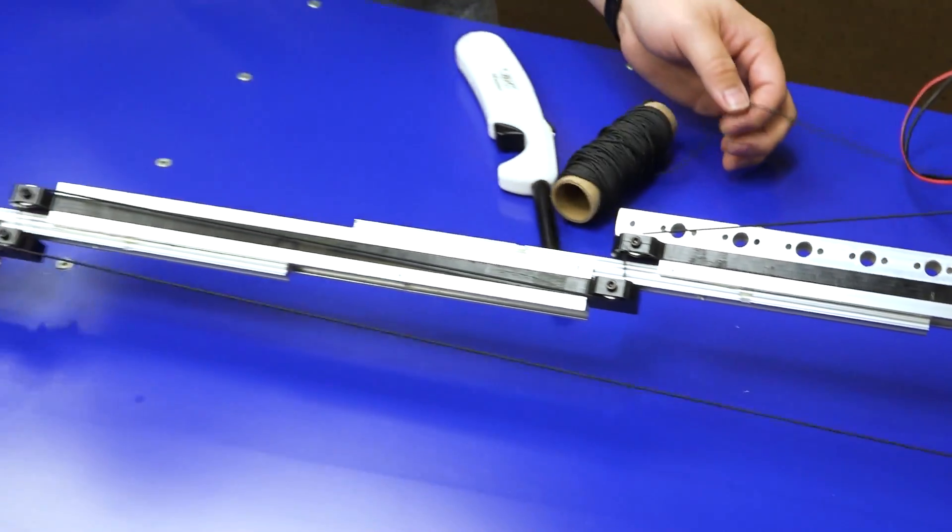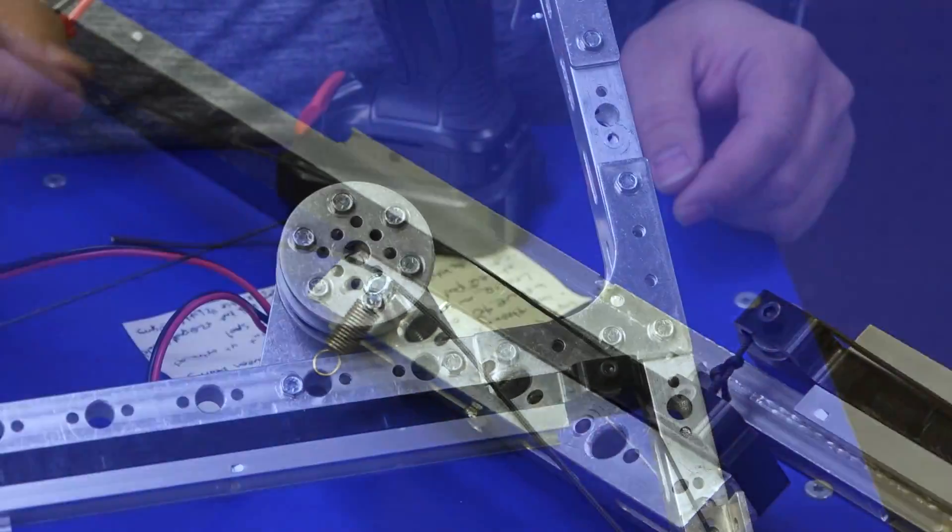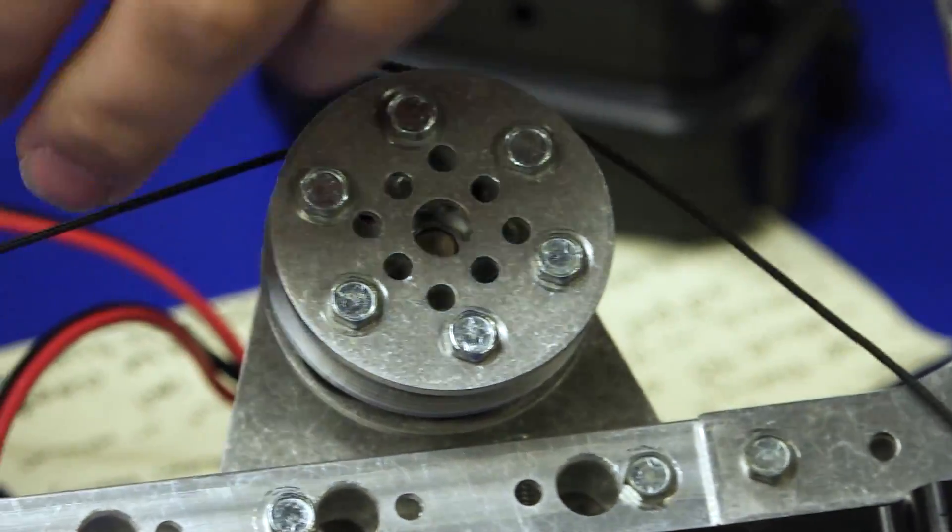We're going to fold the string all the way up to about the top. Give ourselves a few extra inches to play with later. So on this side we're going to go a few inches past the spool.